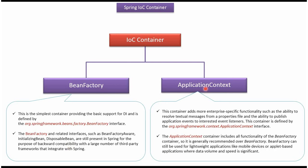ApplicationContext container adds more enterprise-specific functionality, like the ability to resolve text messages from a property file and the ability to publish application events to interested event listeners. ApplicationContext container includes all functionality of BeanFactory container and also supports some additional functionalities, so it is better to use ApplicationContext container.